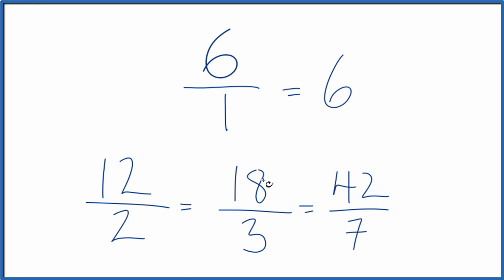Divide 12 by two, 18 by three, 42 by seven or six by one, you get six. They're all equivalent fractions.